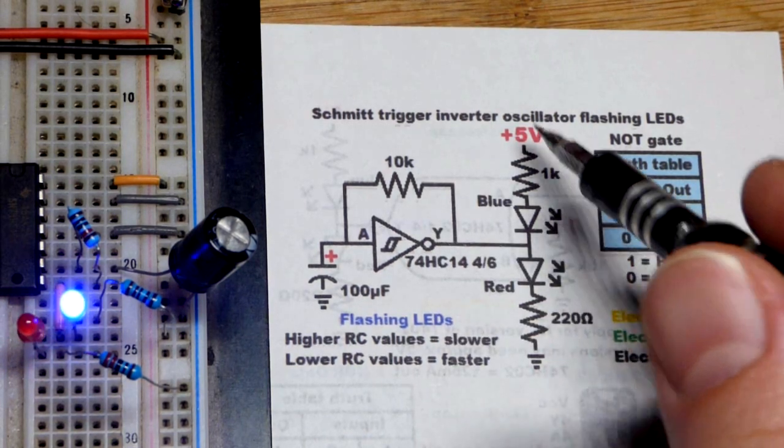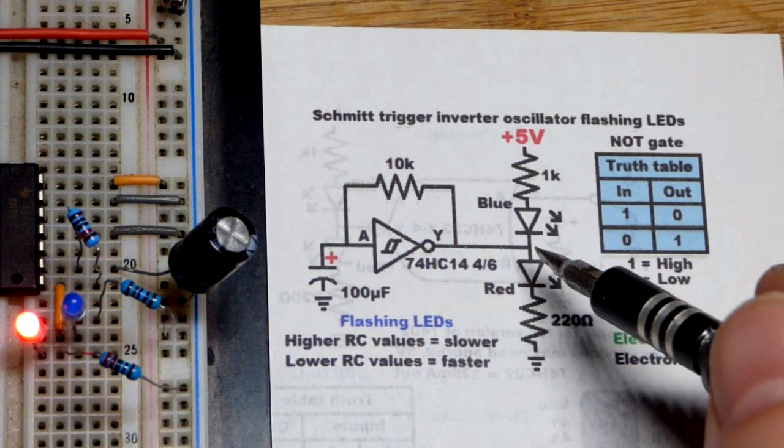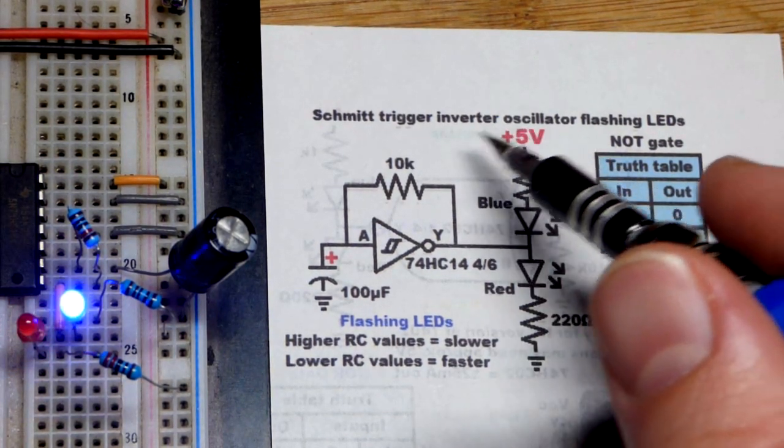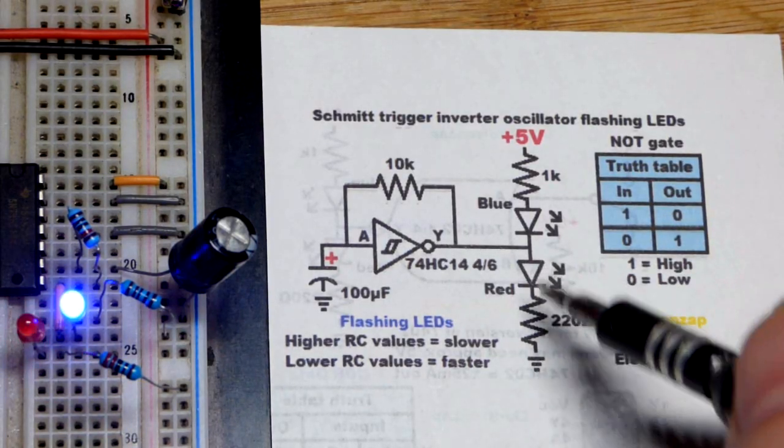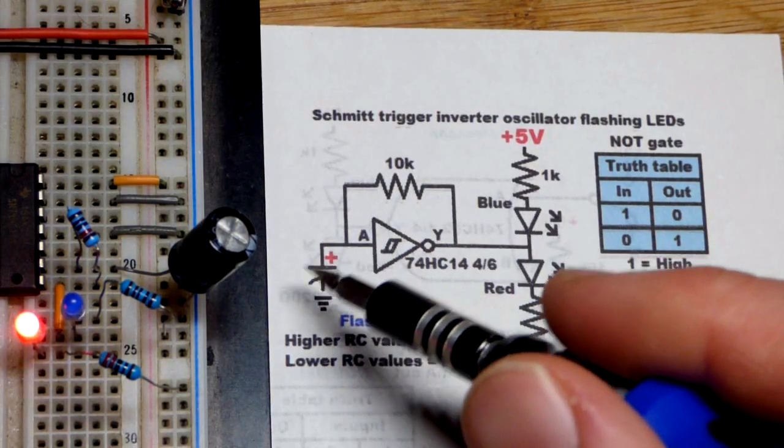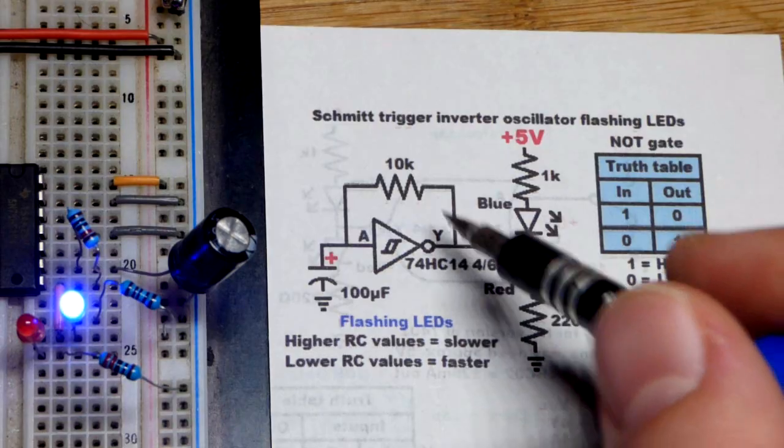When the output is low, that's when the blue LED lights up. You can see that path there. And then with the red LED, it lights up when the output is high. And we already explained that it's flipping back and forth between high and low.